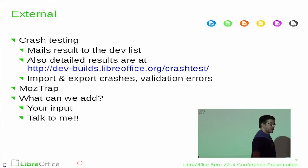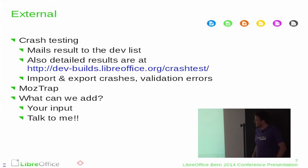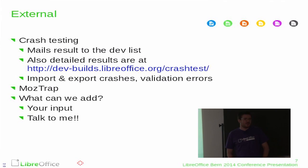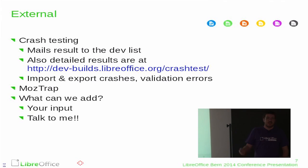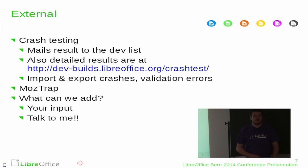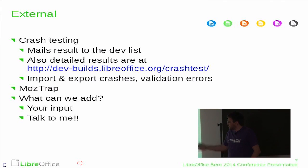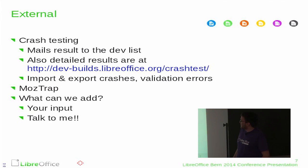We also have some external automated testing. The most famous example at the moment is the crash testing, which runs on 55,000 documents — imports them and exports them to a few formats. At the moment we export about 150,000 documents. It checks if we crash during import or export, then validates the ODF and OOXML files that are generated, and publishes results on a URL. It also emails the developer mailing list with the number of files that crash. We still have a few tens of thousands of validation errors, and the last run had suddenly 100 more import crashes and a few hundred more export crashes, so there is some room to fix things.